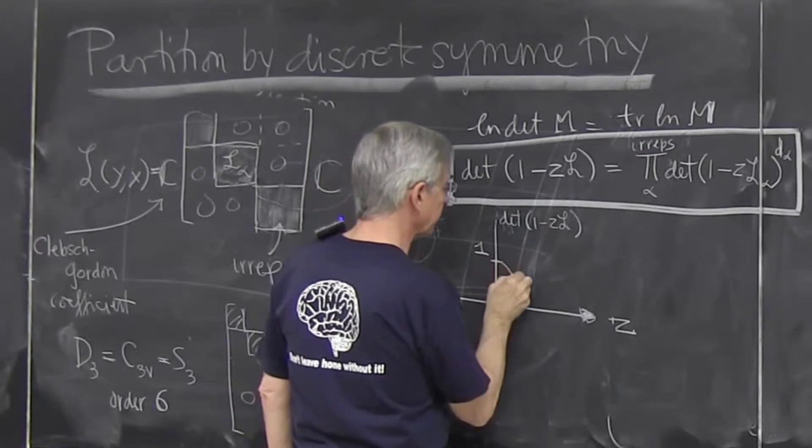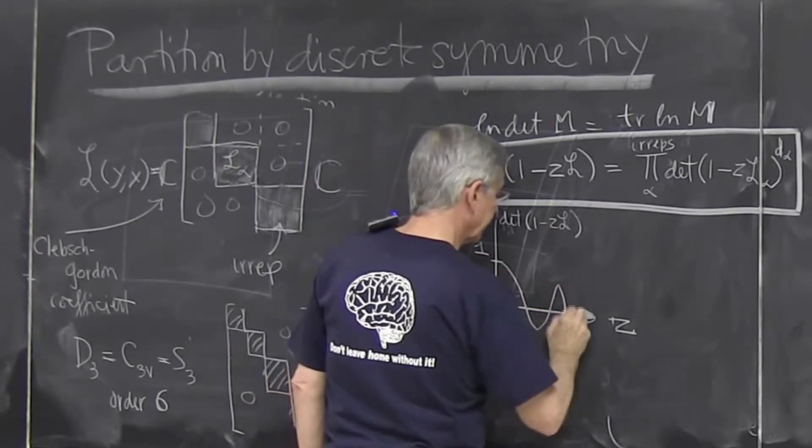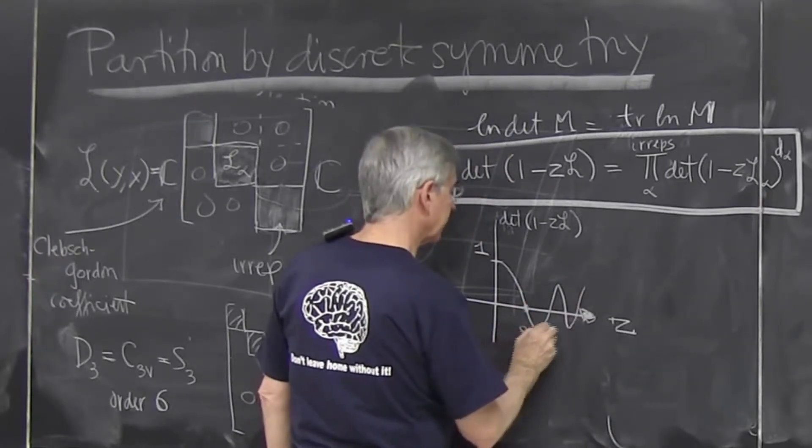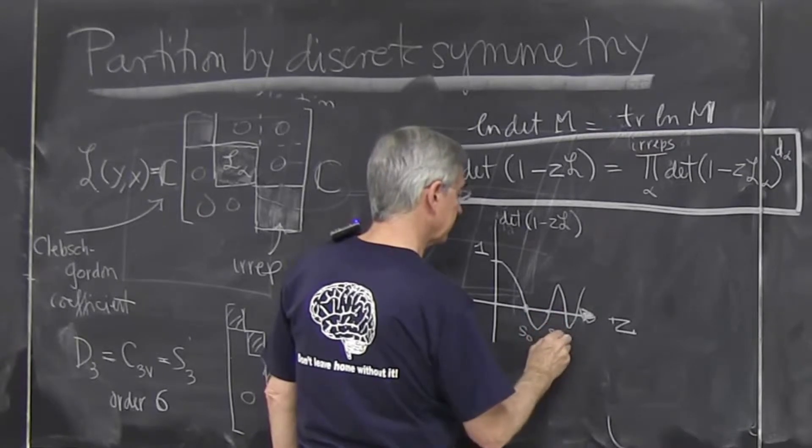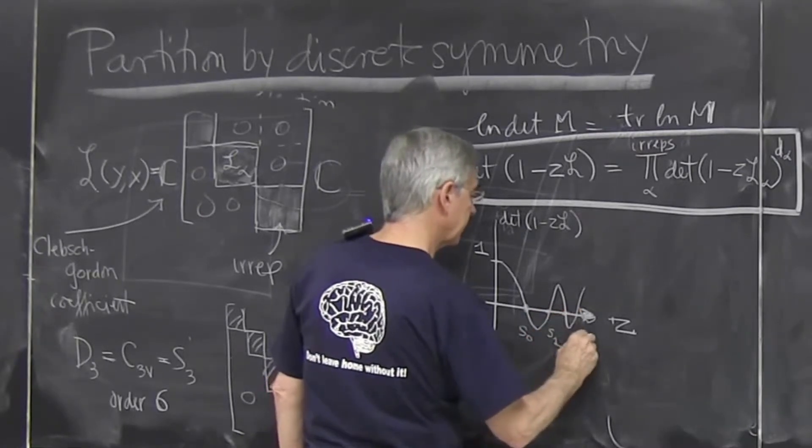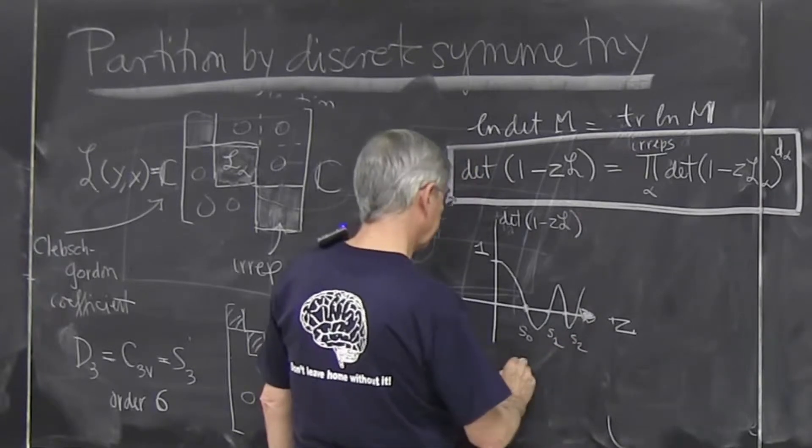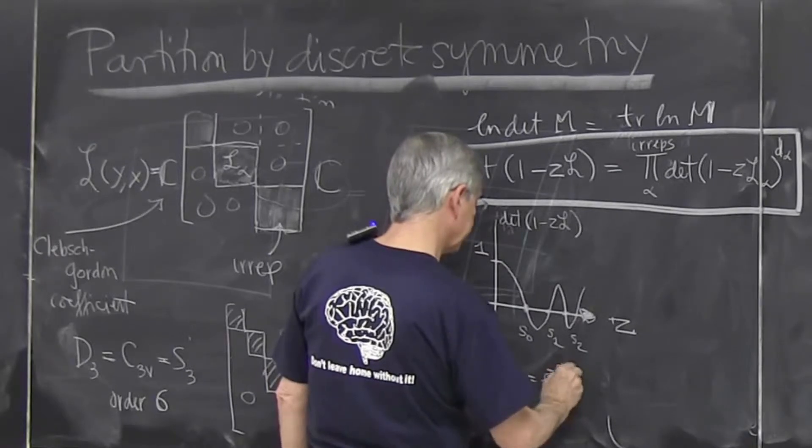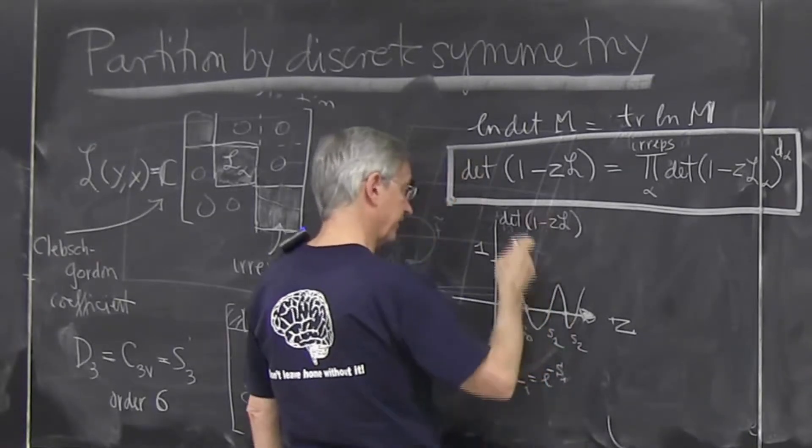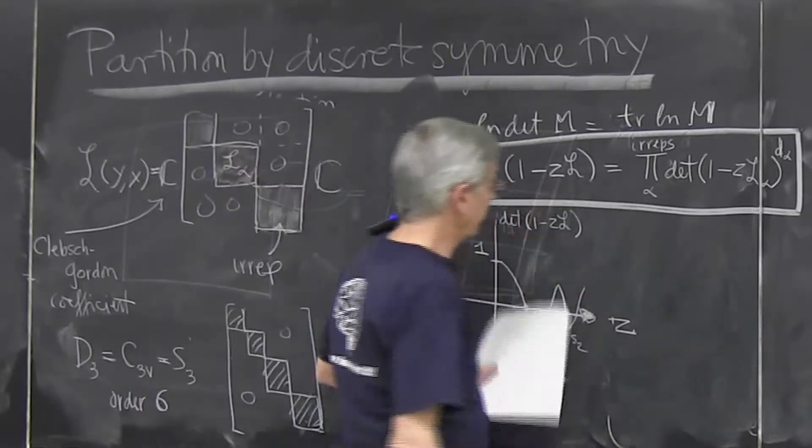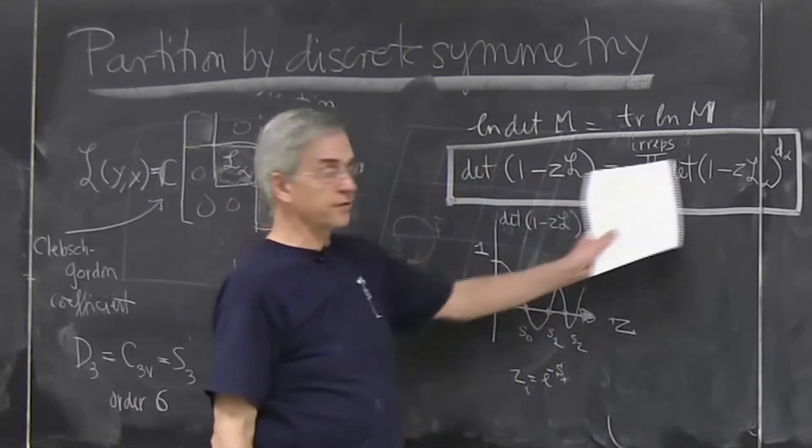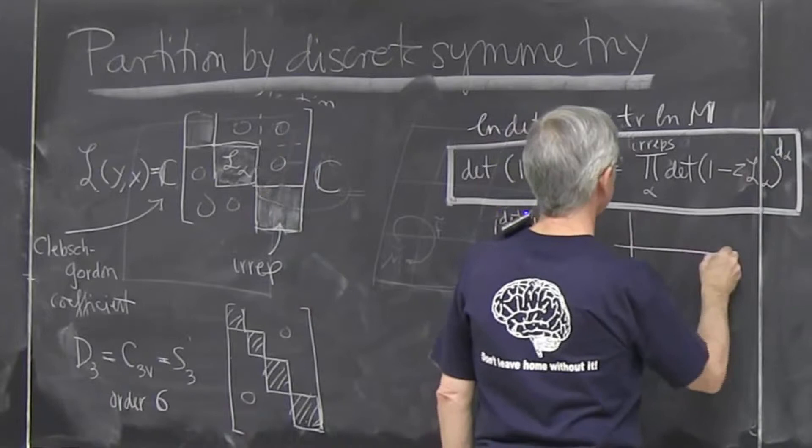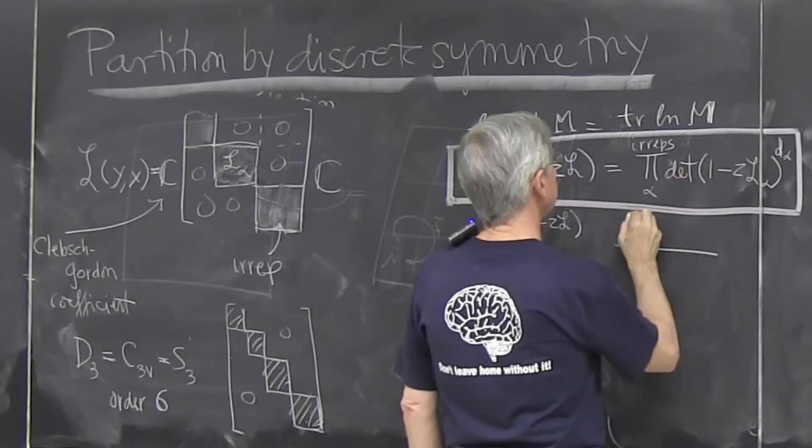But it'll be some function. And it'll have some zeros. So this will give me the leading eigenvalue. This will give me the next two leading eigenvalues. That's where z is e to the minus the eigenvalue you're interested in. So the roots of this polynomial if you truncate it. But now we find that this function is a product of different functions.